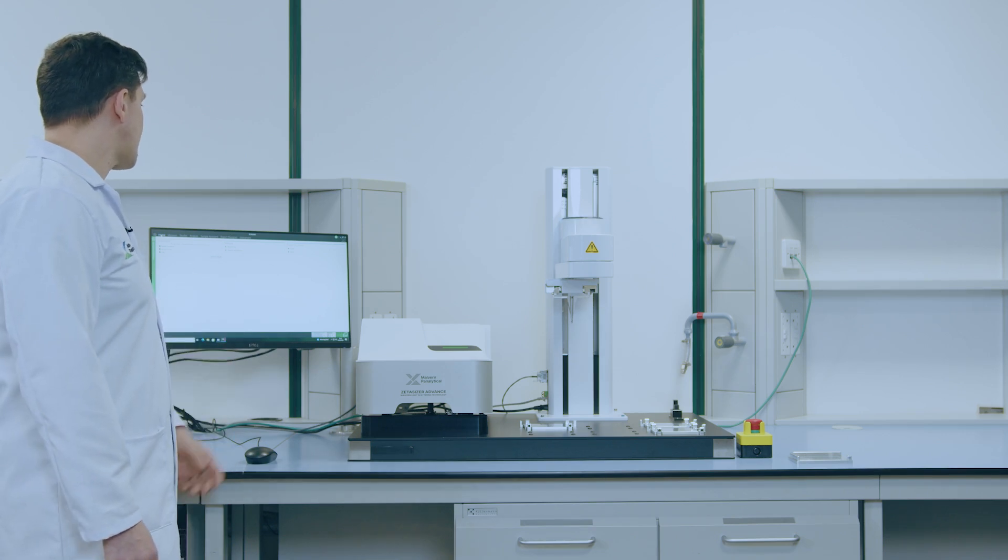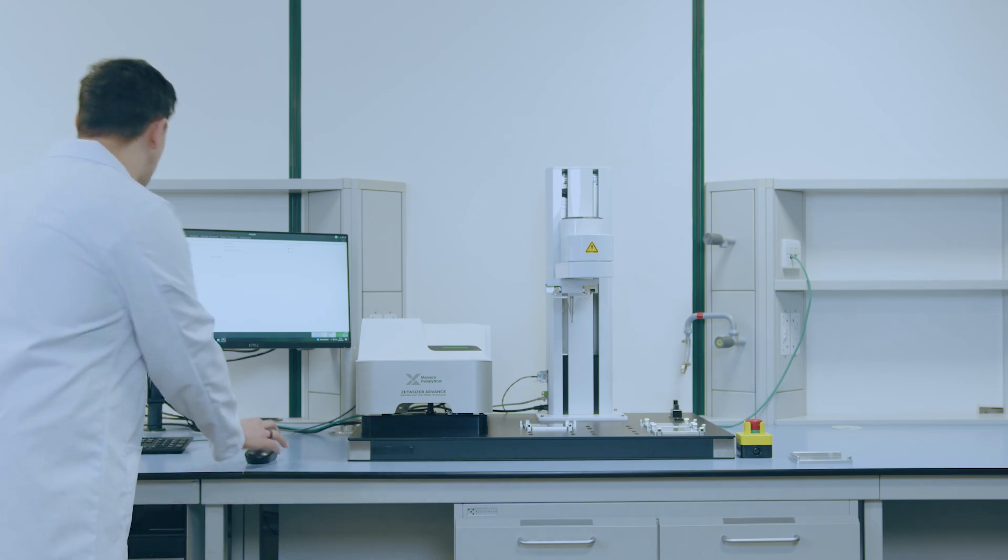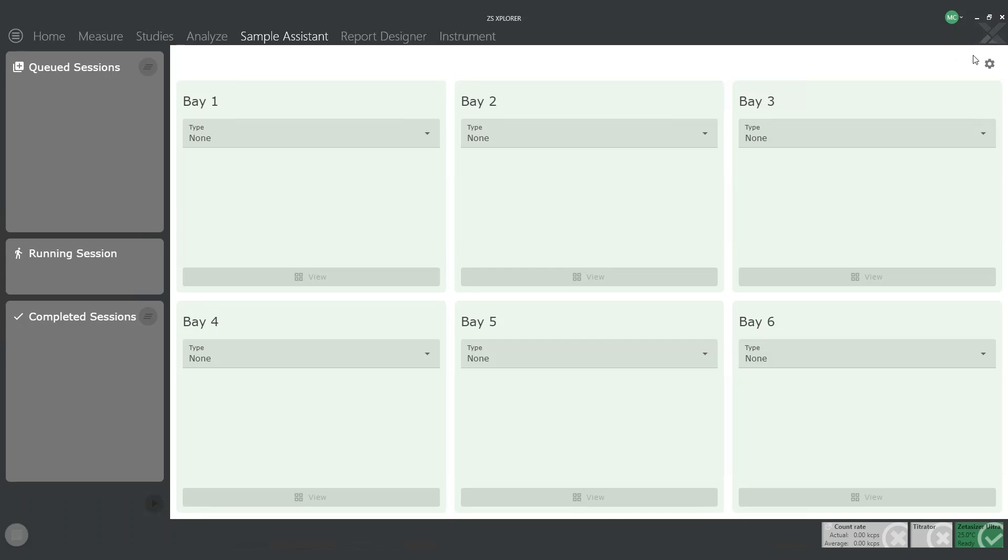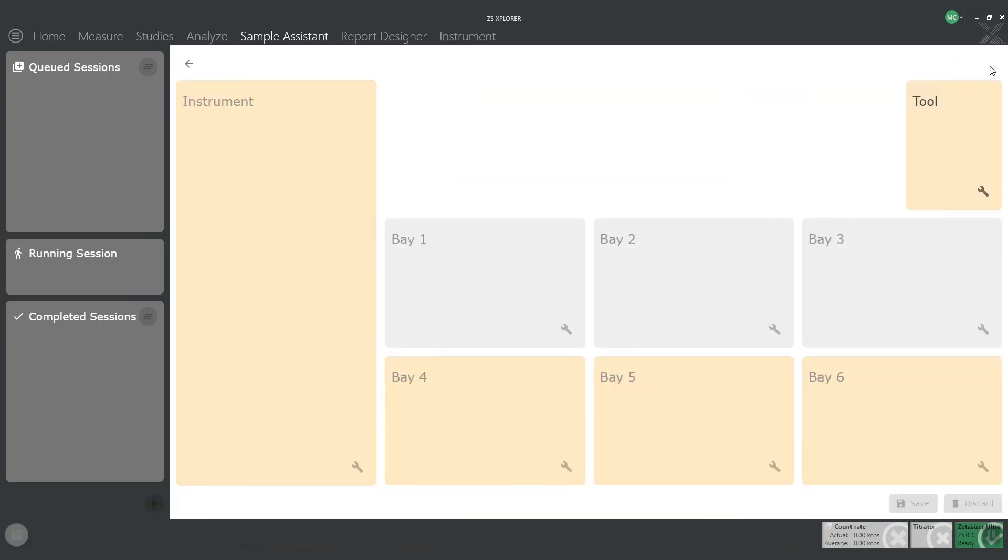The first step of your configuration is opening your Zetacizer Explorer software and navigating to the Sample Assistant tab. Once in the Sample Assistant tab, you will have to navigate to the configuration page where you will be able to configure the tool bay position, the Zetacizer instrument position, and all the trays that you have installed on your base.